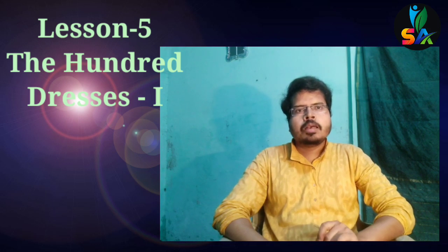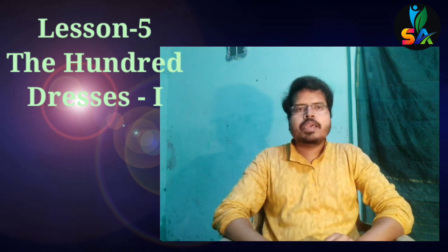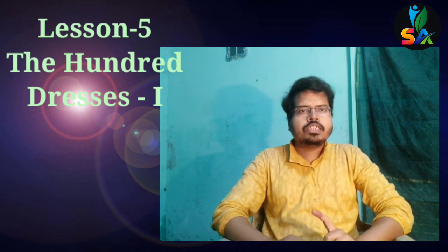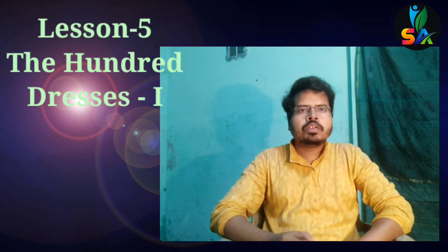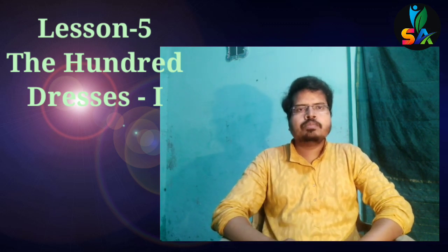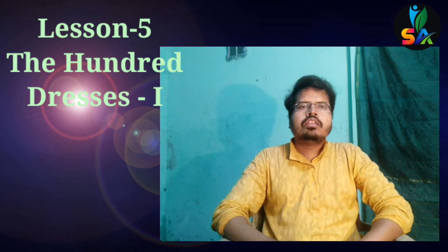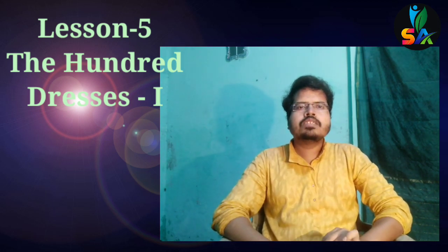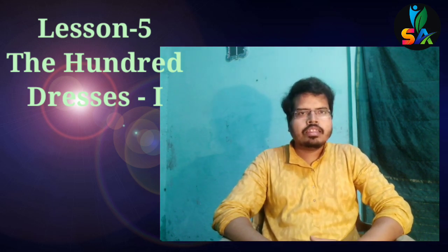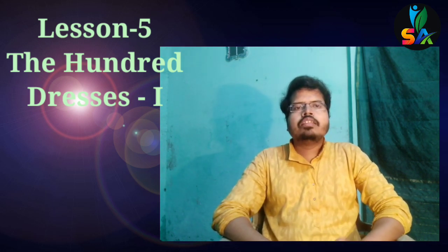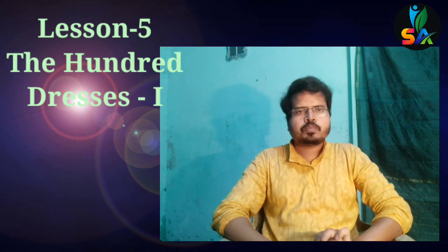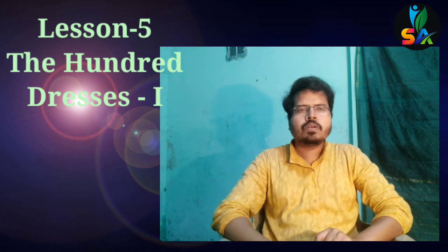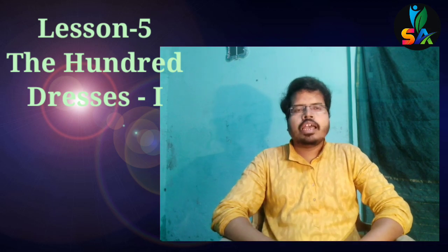The third character is Maddy. Maddy is Peggy's close friend, but she was also a poor girl. She sometimes wore worn-out, used dresses belonging to her friend Peggy and other rich people. The fourth character is Miss Mason, who was the class teacher — very helpful and cooperative toward the students.